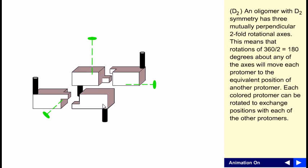A 180-degree change from one protomer will have the position of another protomer. Each colored protomer can be rotated to exchange positions with each of the other protomers.